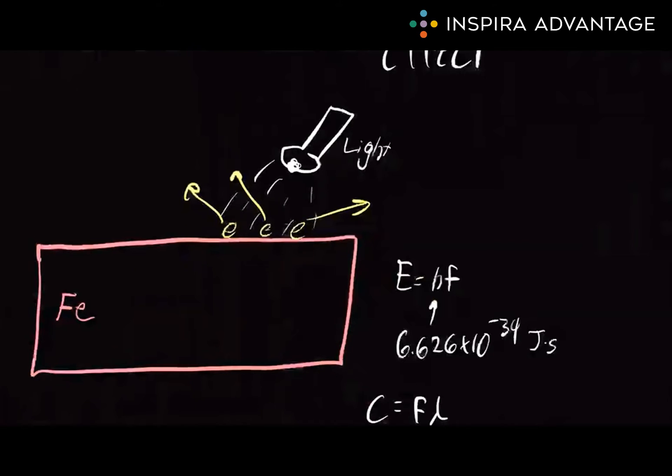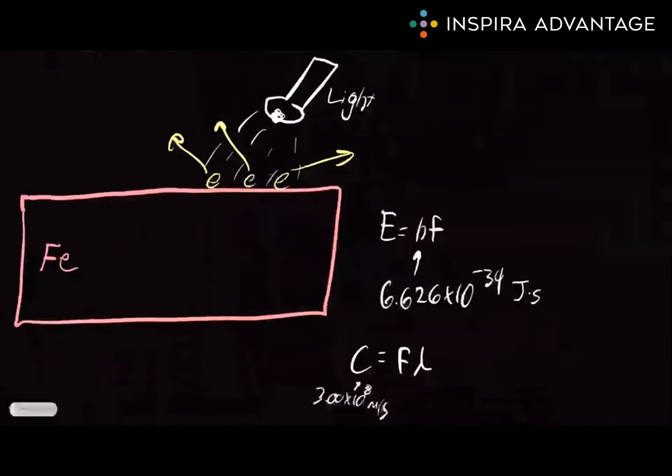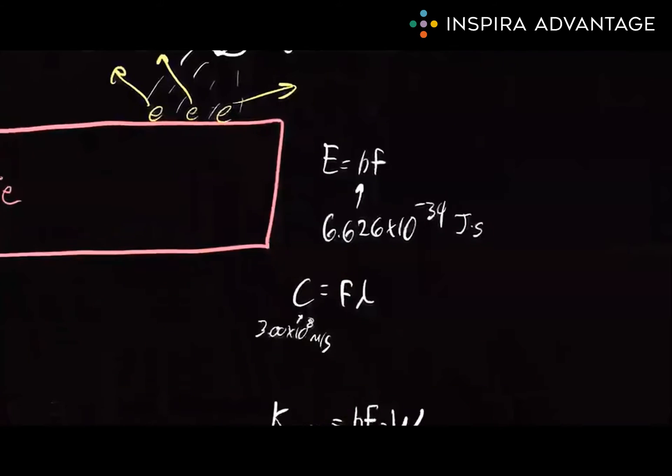Let's break down the energy of a photon of light first to truly understand this. So energy is given by the formula E equals HF, where E is the energy of the photon, H is Planck's constant, and F is the frequency of the light.